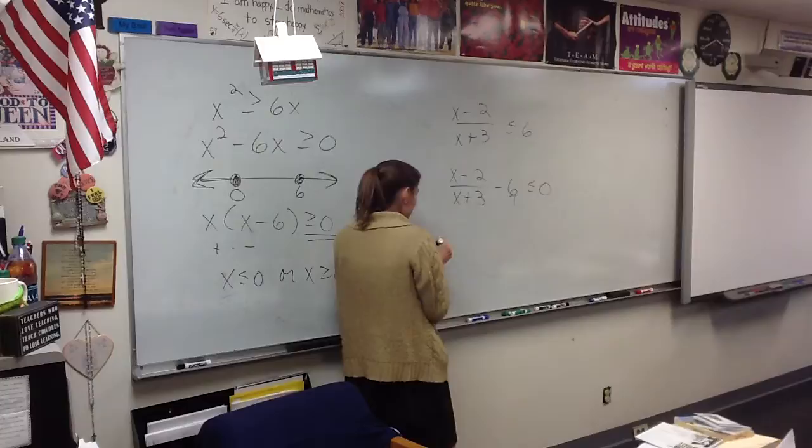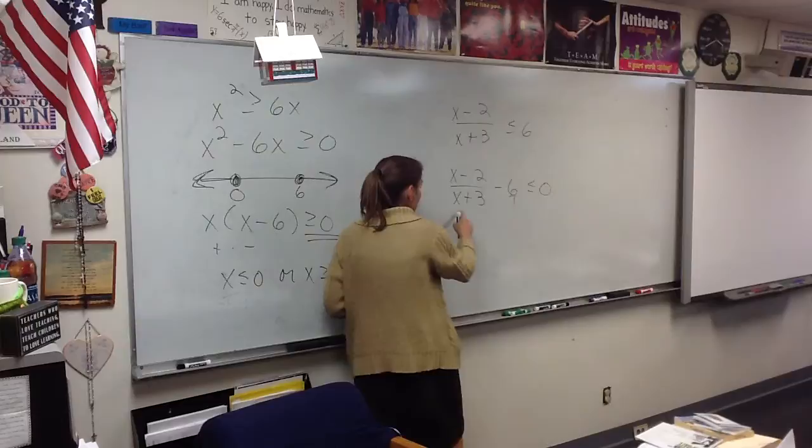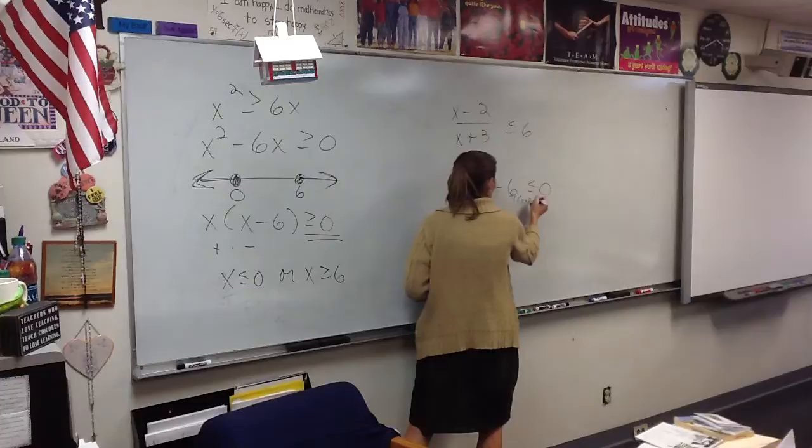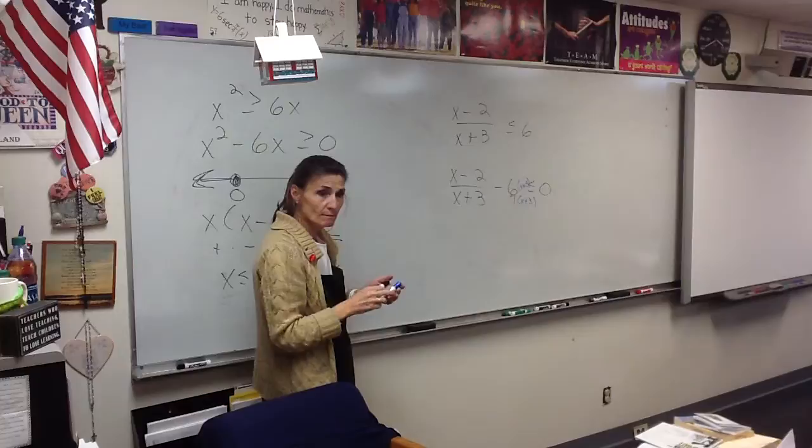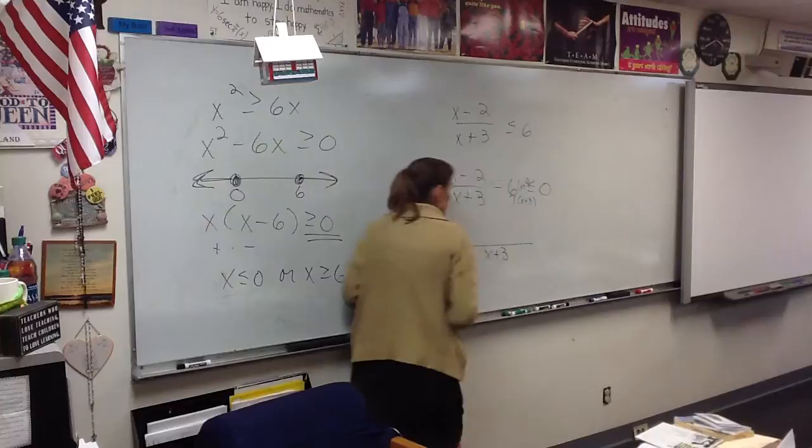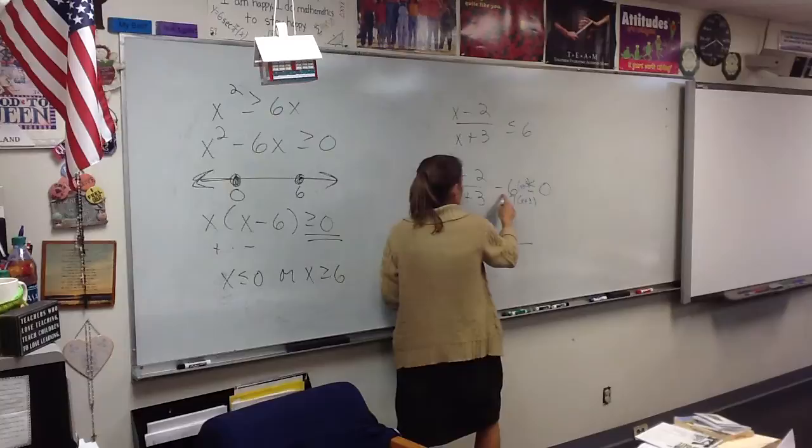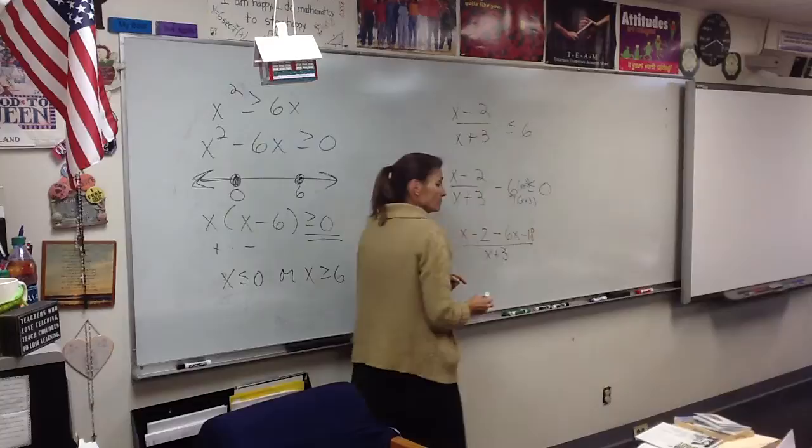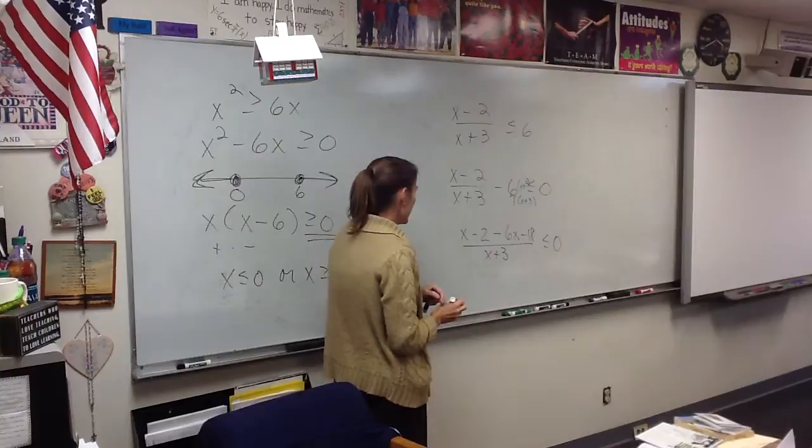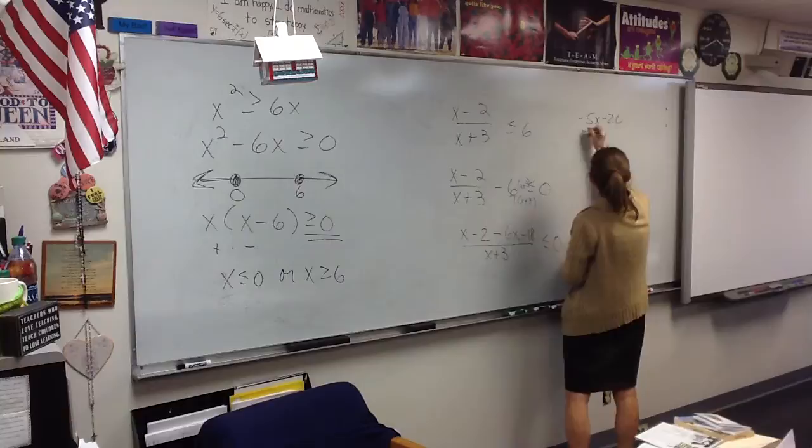And the only way to put them together is to get a common denominator. So the common denominator is going to be x plus 3. So I will multiply this fraction, top and bottom, by x plus 3. So my denominator is x plus 3. Now they match. So I have x minus 2. Okay, be really careful here. What is this? Minus 6x minus 18. What is that? Minus 5x minus 20.